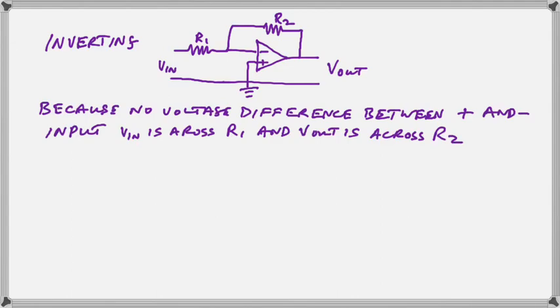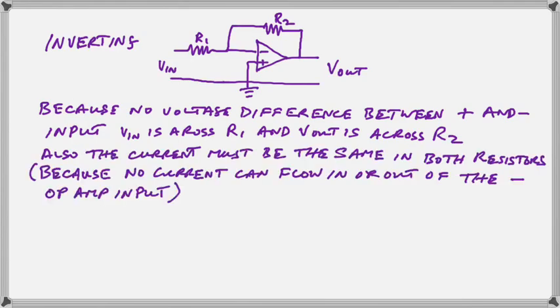Now, once again, because there is no voltage difference between the plus and minus input, the VIN is across R1 and the VOUT is across R2. Can you see that? Look at the two inputs, plus and minus. The plus input is connected directly to ground. That is the little ground symbol that you see there. The ground symbol is always 0 volts. So 0 volts must also be at the minus input. And since 0 volts is now then at one end of both R1 and R2, the VOUT is going to be across the R2, and the VIN is going to be across the R1.